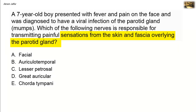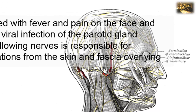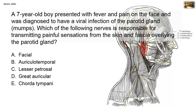Let's review the options. The first option is the facial nerve. The facial nerve leaves the stylomastoid foramen and enters the substance of the parotid gland. The parotid gland is located just below the auricle of the ear, over the angle of the mandible, and slightly overlies the masseter muscle. The facial nerve enters the parotid gland and divides into a network of nerves.